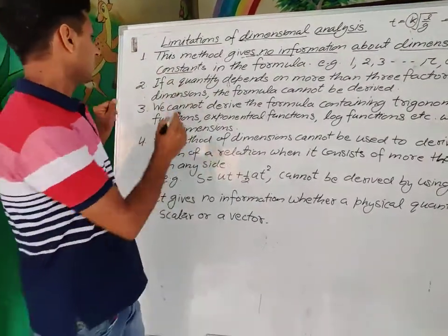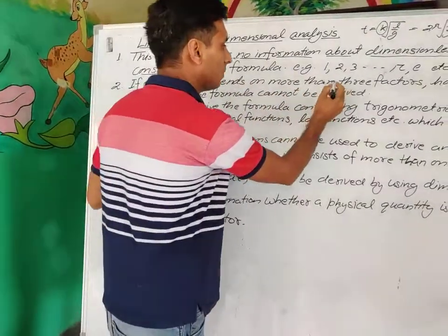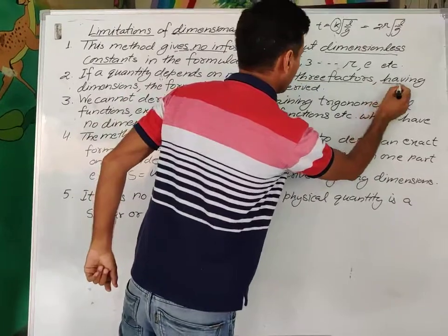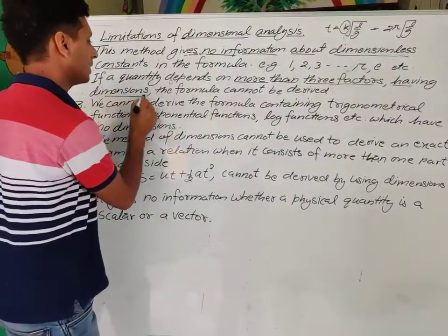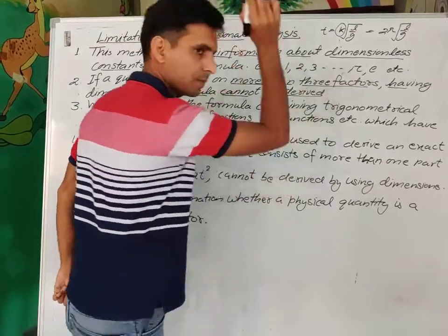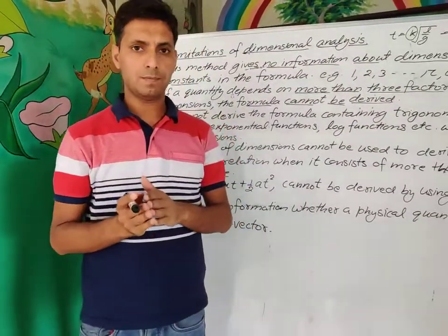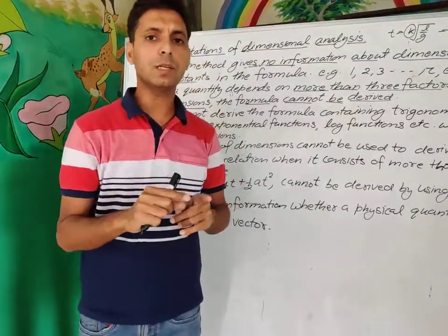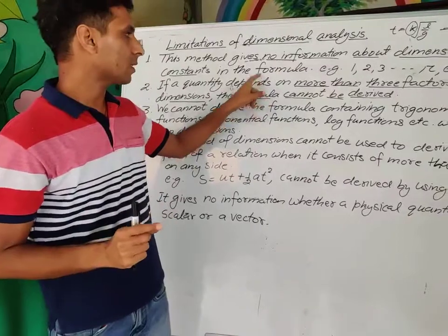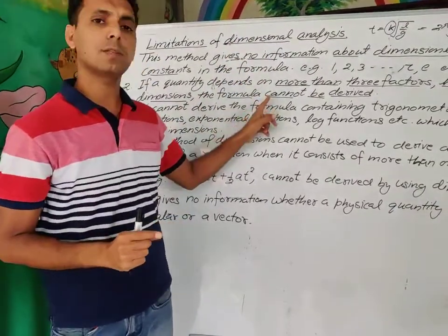Second limitation: if a quantity depends on more than three variables having dimensions, then the formula cannot be derived. If we have more than three physical quantities with dimensions, dimensional analysis cannot be applied to derive the formula.